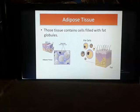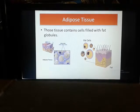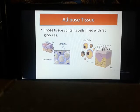Today I will discuss adipose tissues. This is one kind of connective tissue. These tissues contain cells filled with fat or globules, which is why they are called adipose tissues. Adipose tissues contain fats — the tissues which contain fat are called adipose tissues.